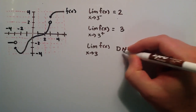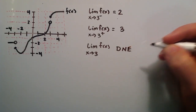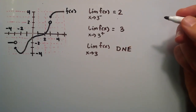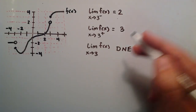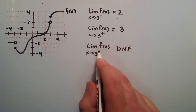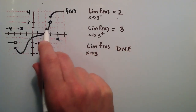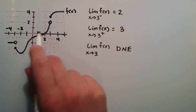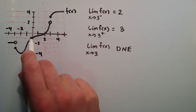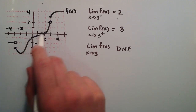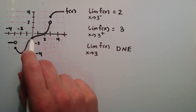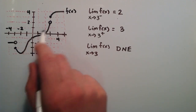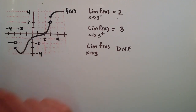So DNE means does not exist. In order for a limit to exist, it needs to approach the same value from both the left and the right-hand side.